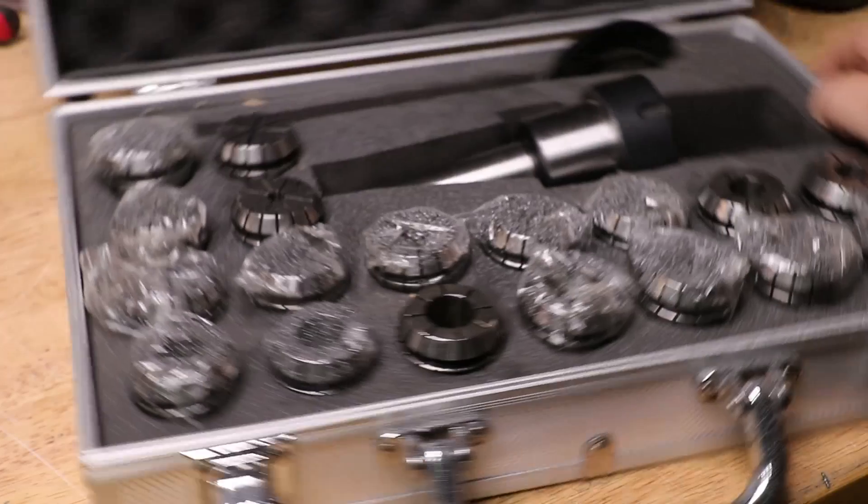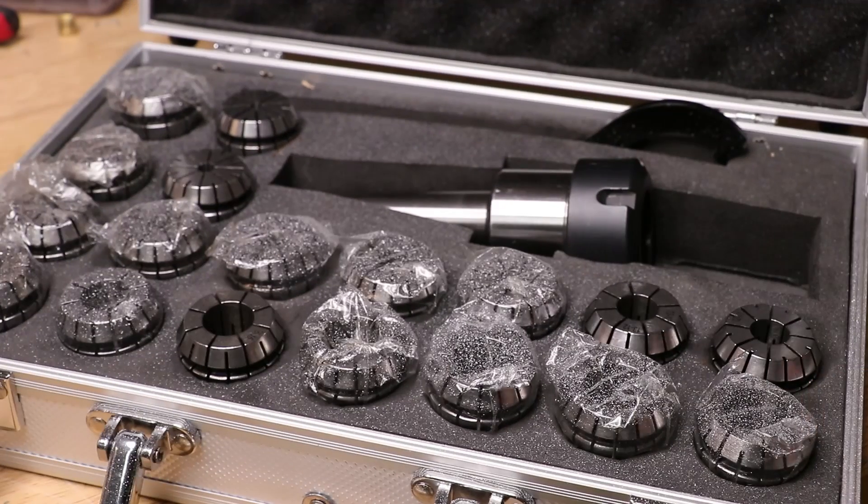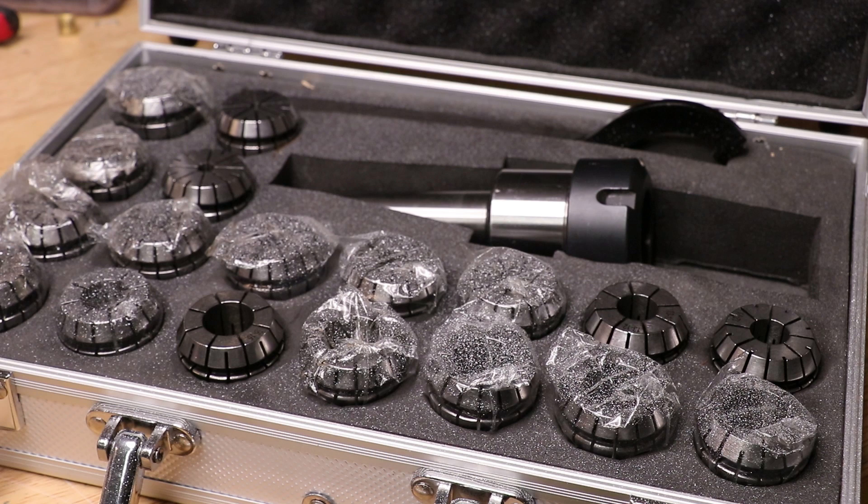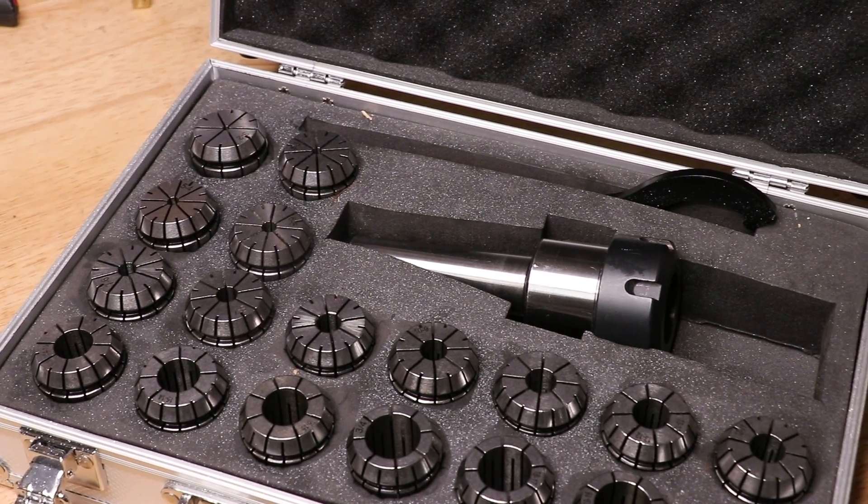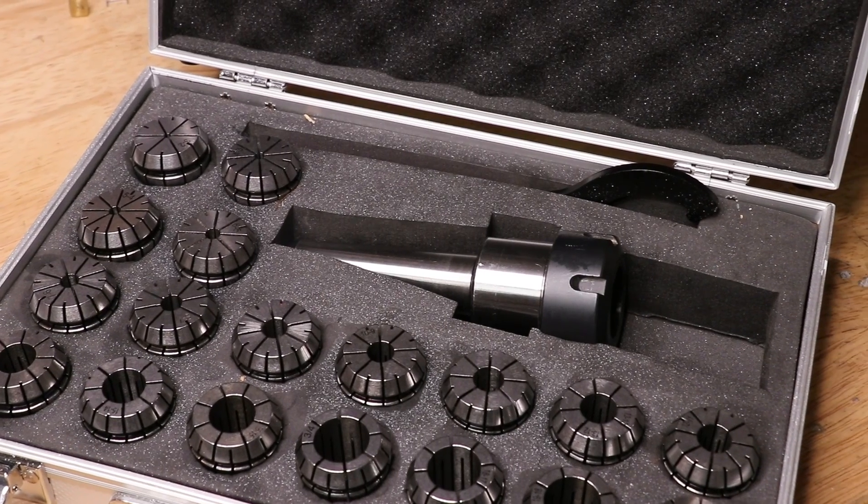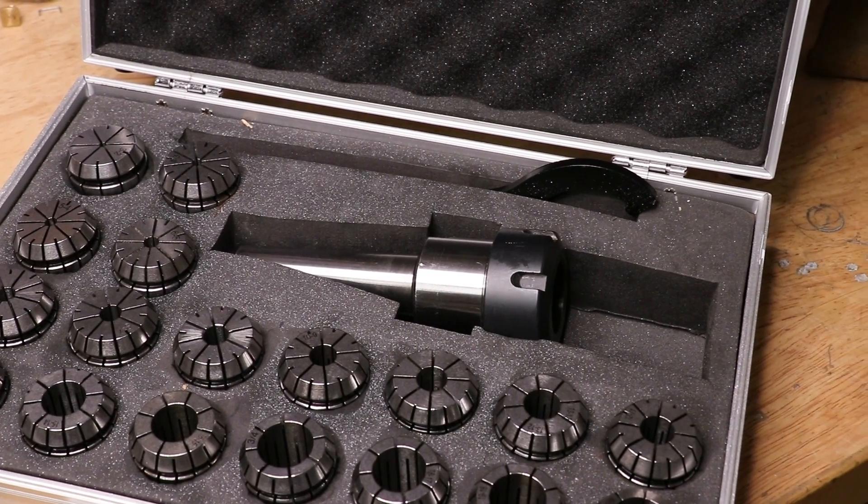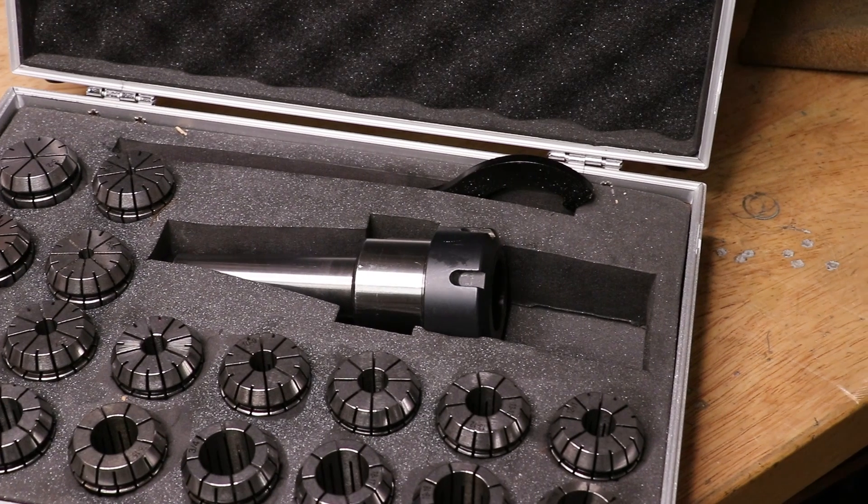I'm sure most of you recognize this. This is the collet chuck that I bought for my mill in order to hold end mills. The collet chuck was just a no-name purchase from eBay. The chuck plus 18 collets, that's 1 to 20 millimeters of range, and the carry case sent me back around 80 Australian bucks, maybe 50 US.